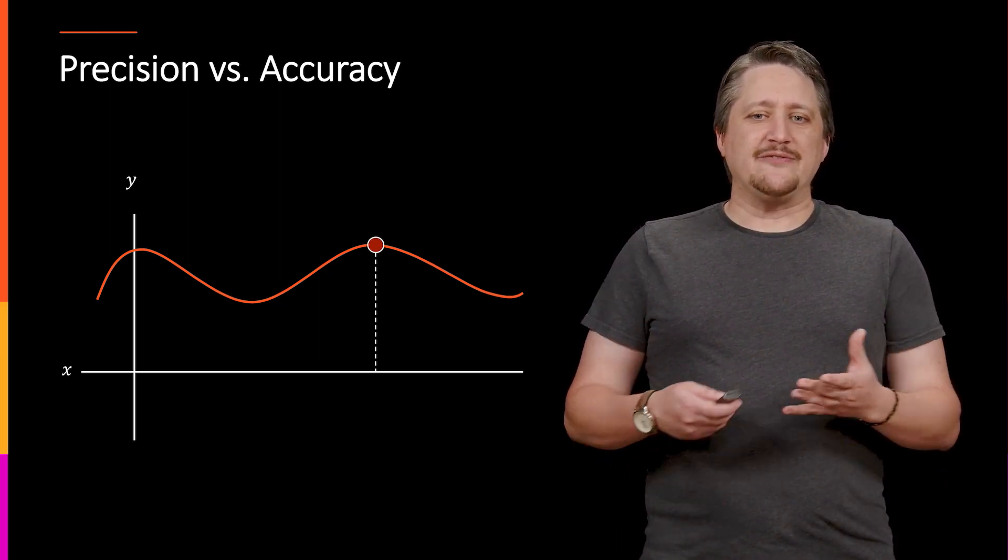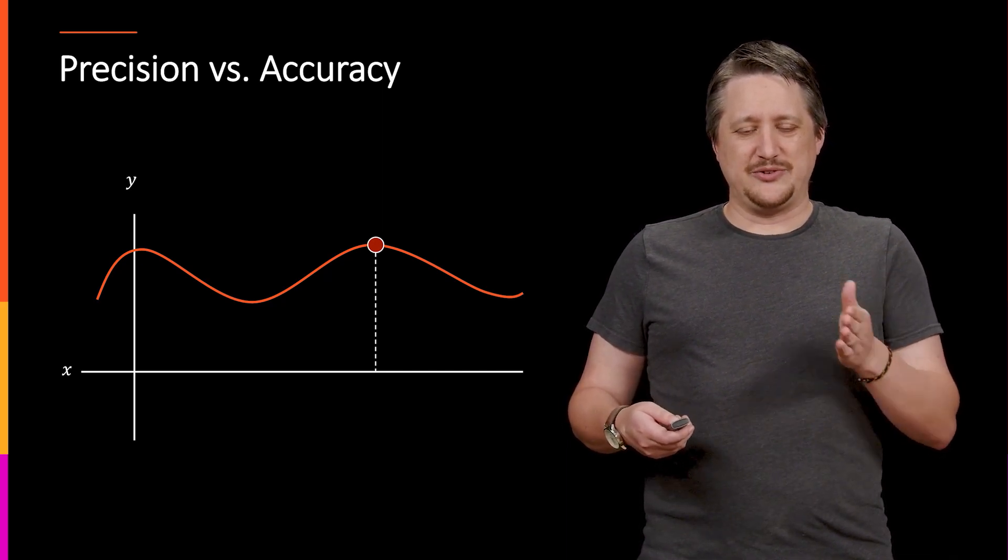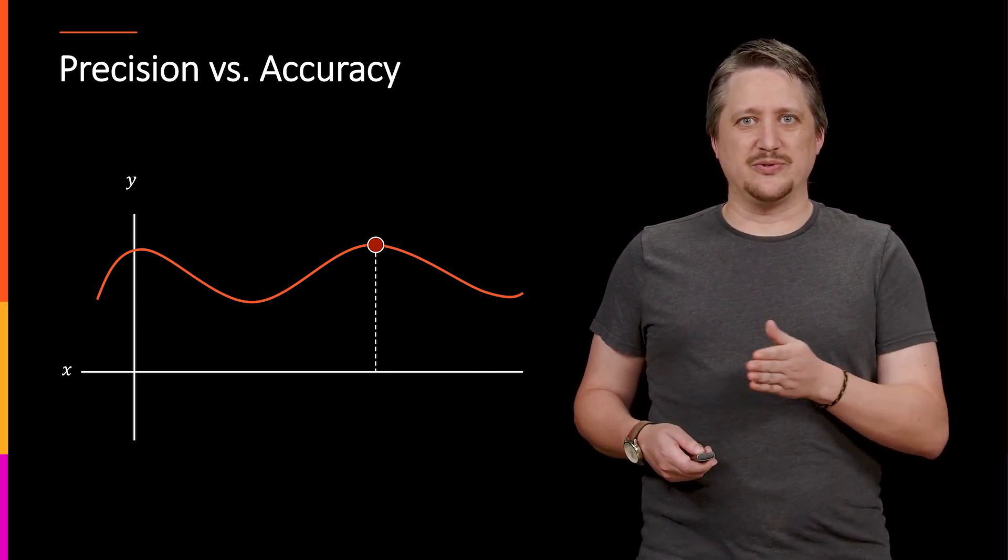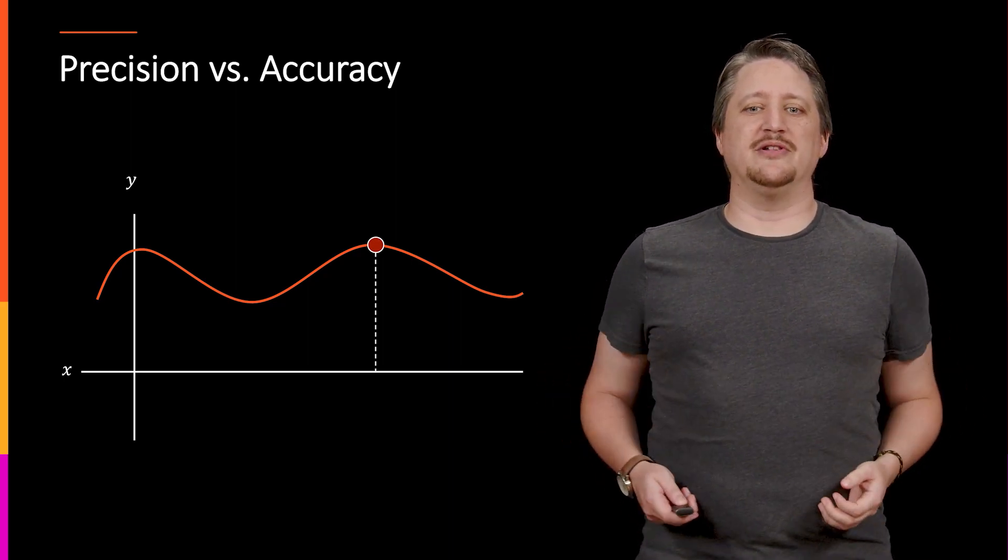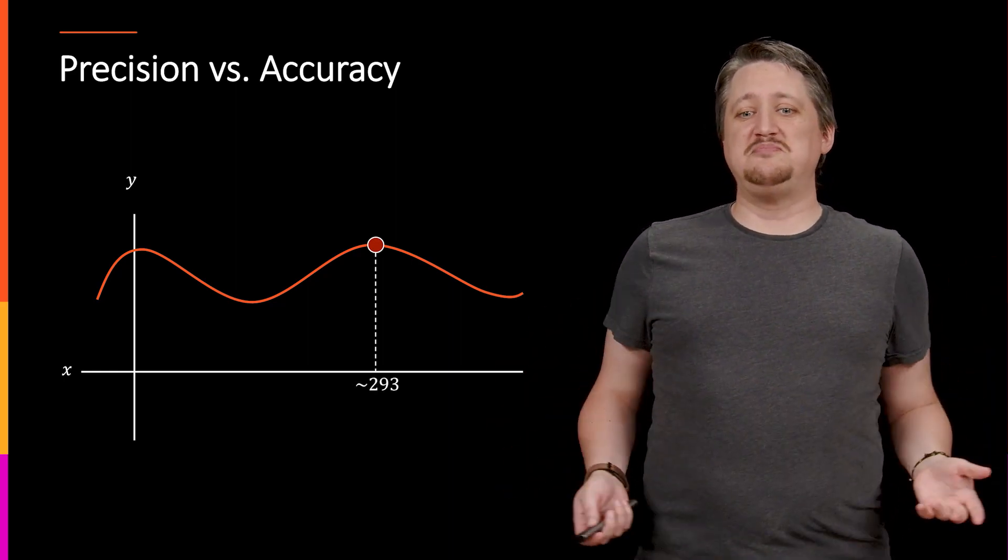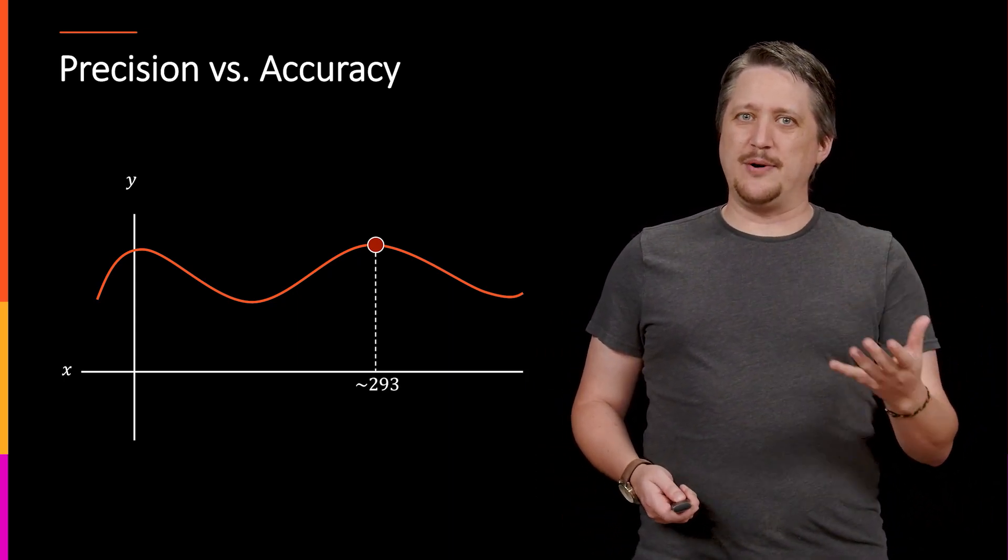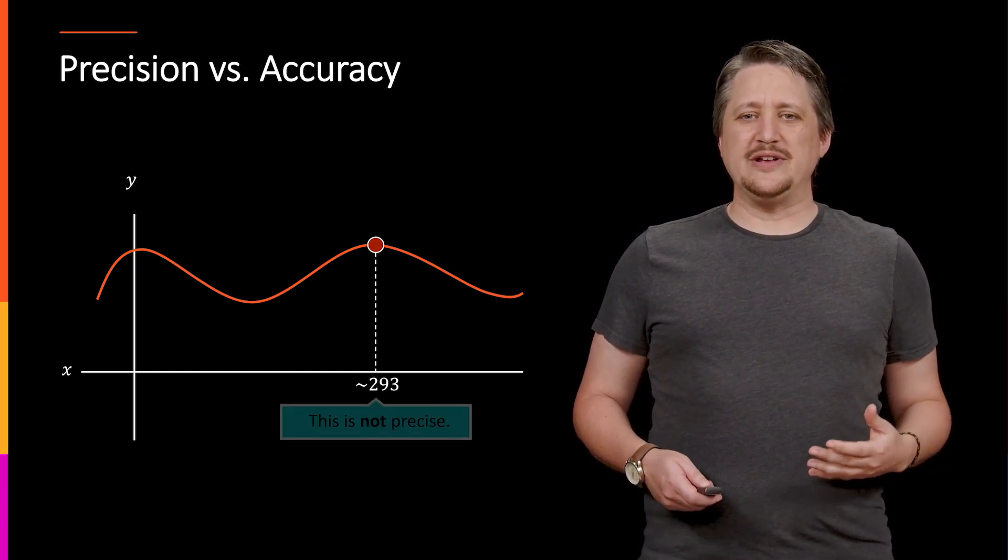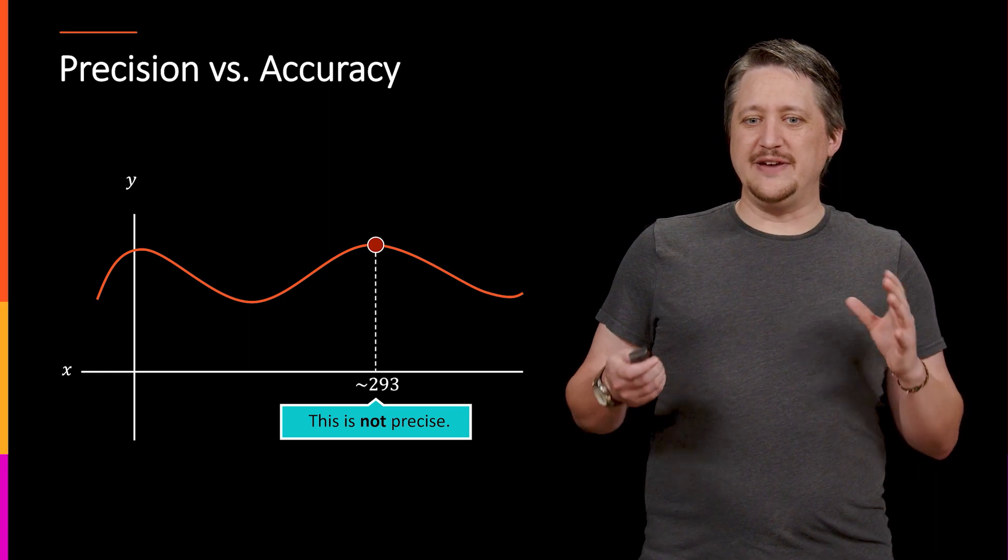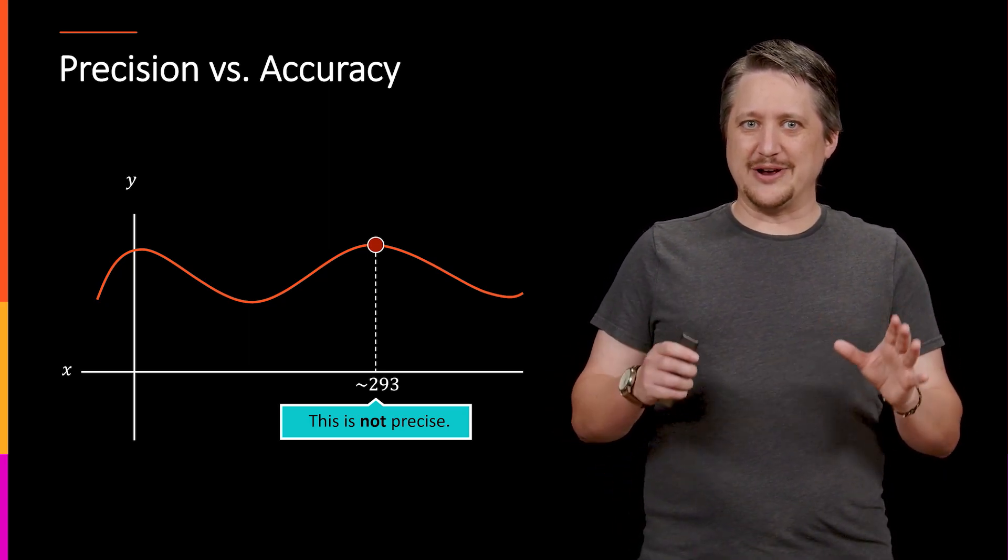But the thing is, if I'm looking at this graph, even if I have tick marks along the X line to show where roughly these numbers are, I might come up with a number like that's roughly 293 or something like this. But that's me eyeballing it and guessing roughly what it is. So it's possible that it's vaguely accurate in the sense that it's close to the right number, but it's not very precise.